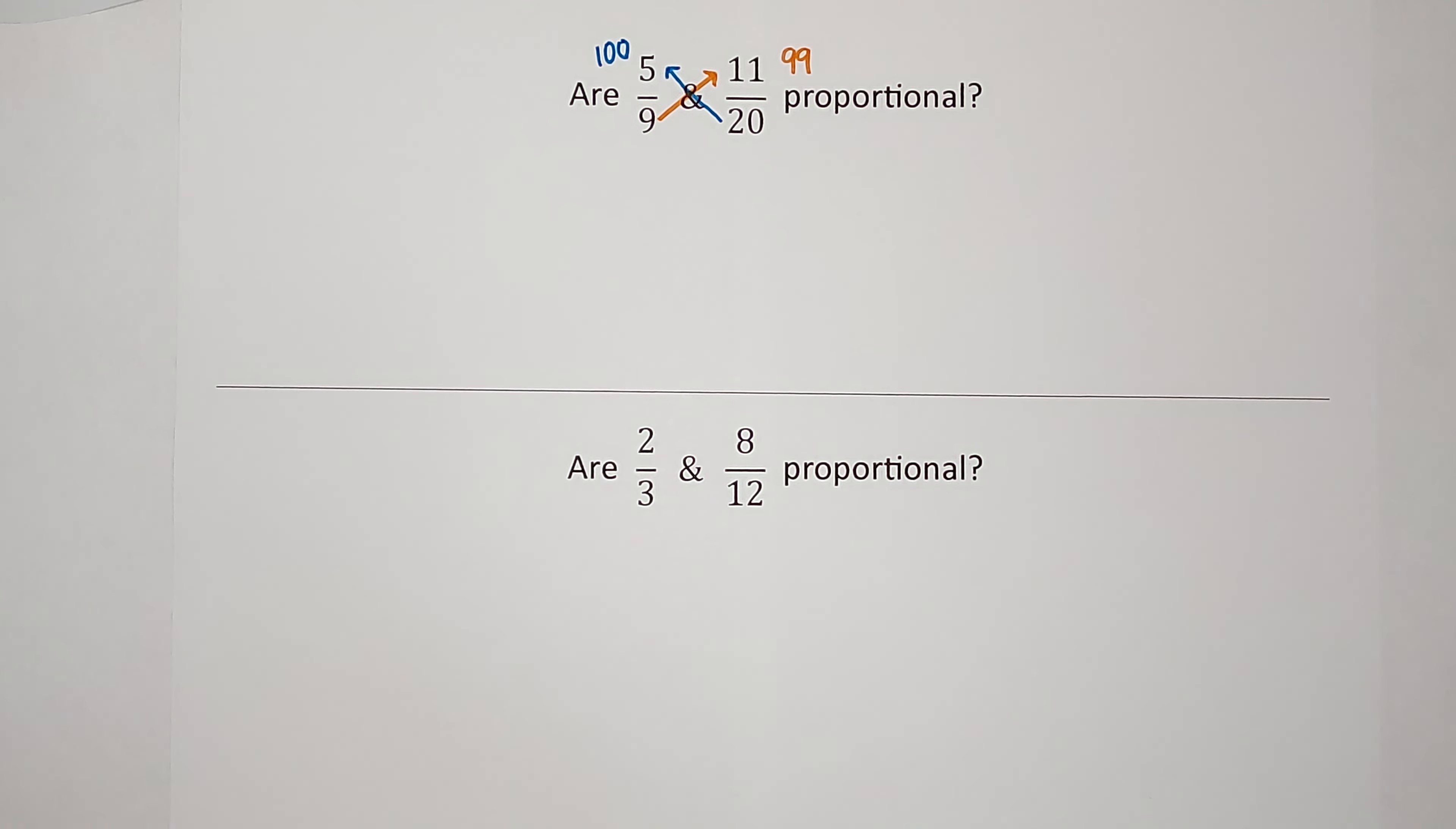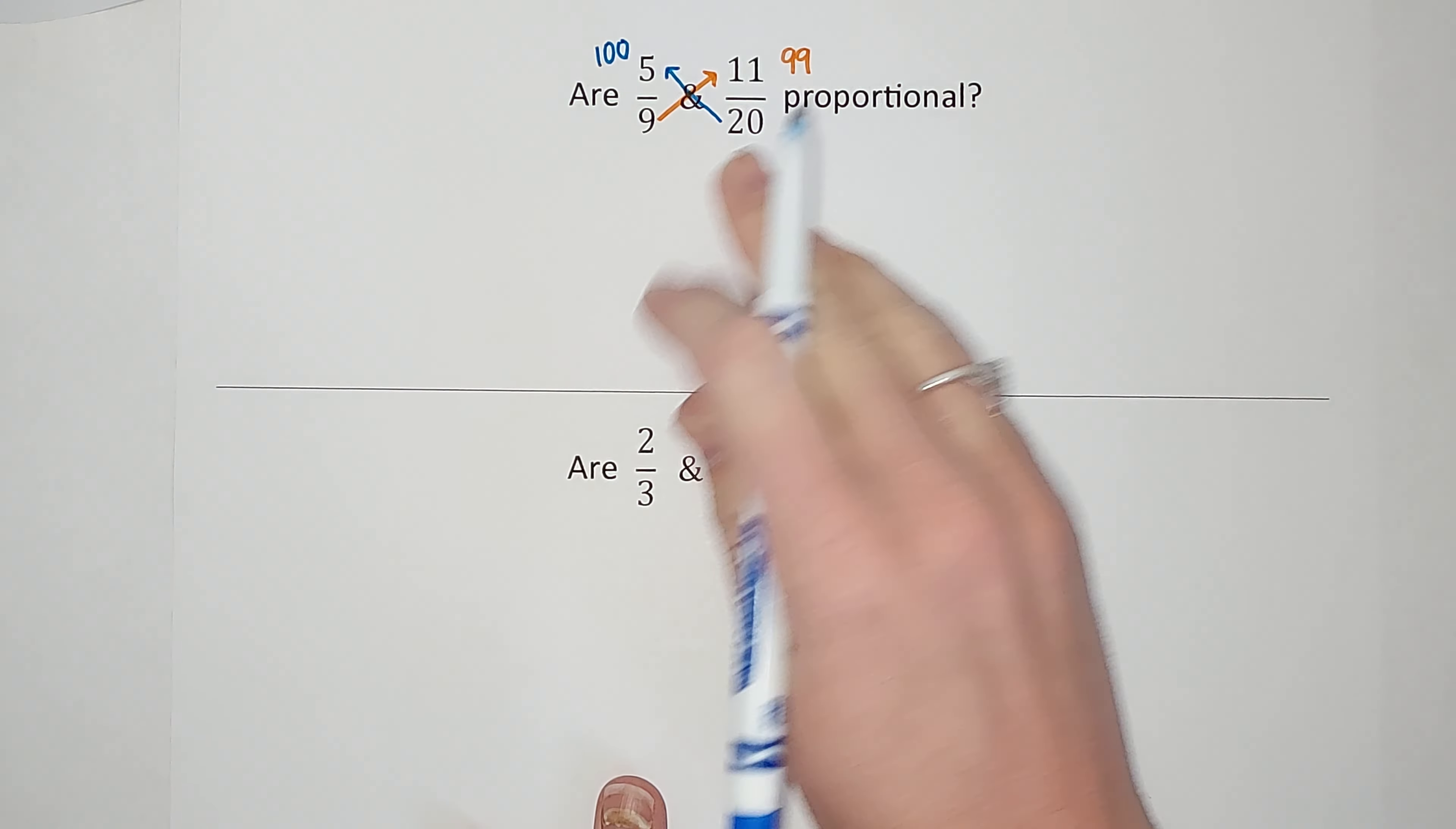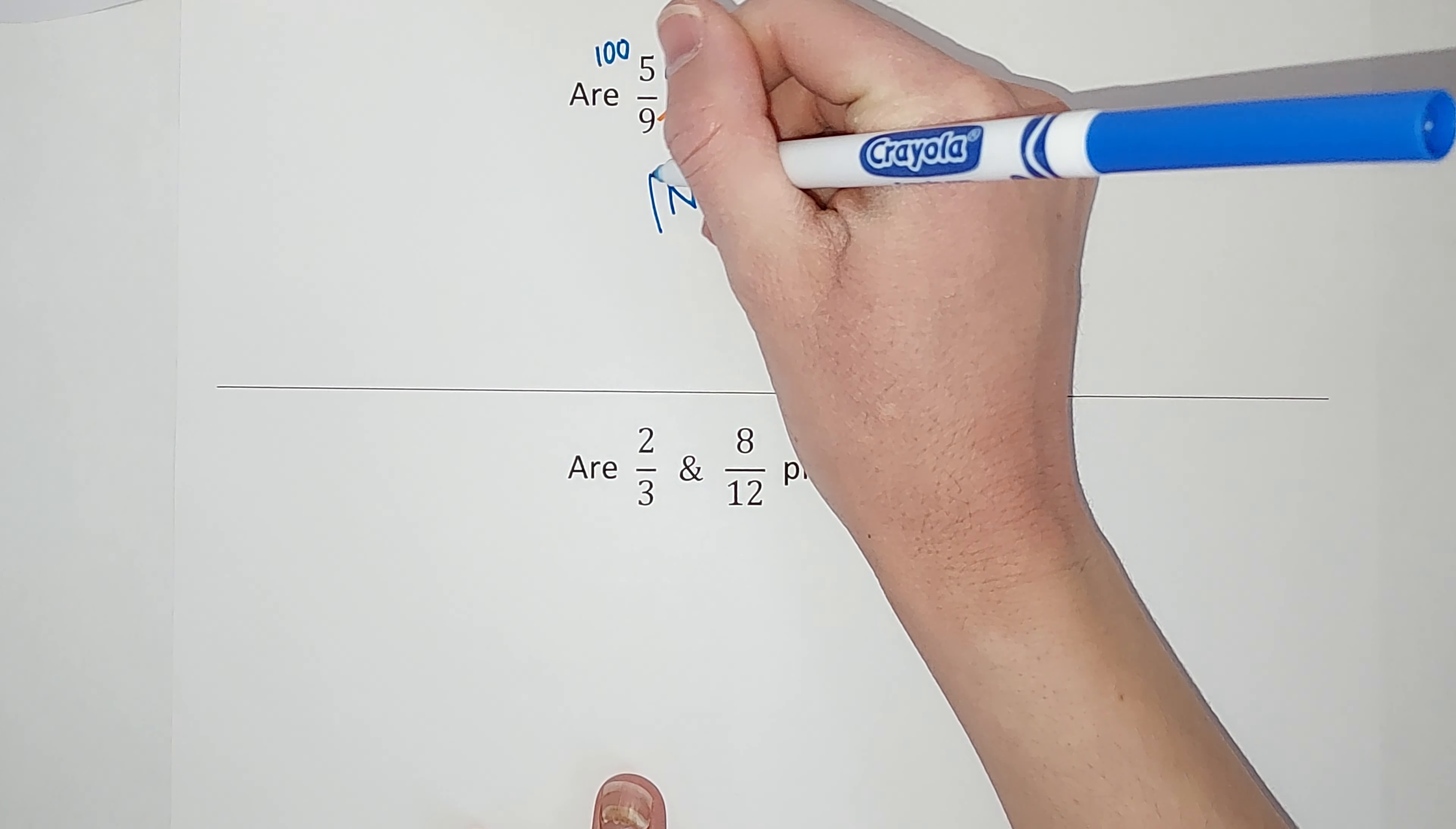If these numbers are the same, they're proportional. If they're not the same, they're not proportional. So these are pretty close, but they are not the same. So 5/9 and 11/20, no, they are not proportional.